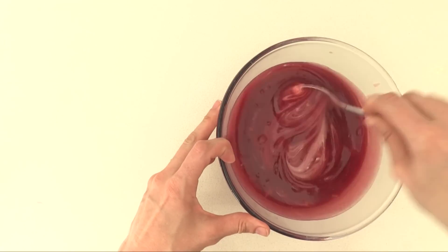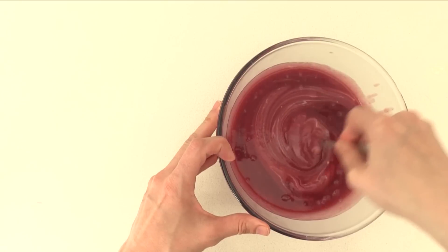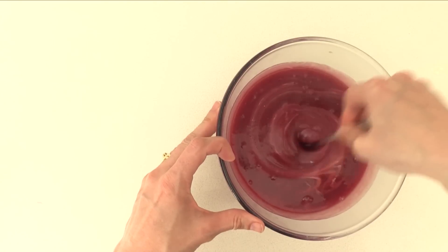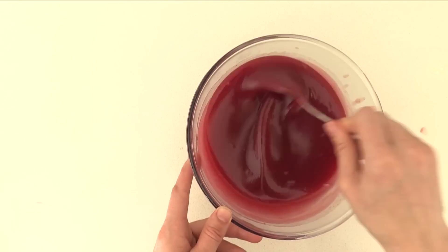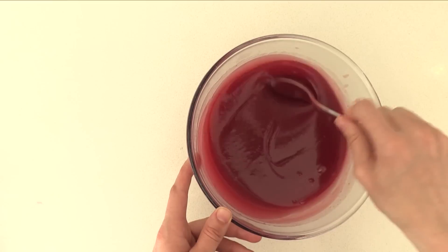If the glaze is quite hot when you pour it over your dessert it will just melt the top layer of the dessert and then slide off. That's not what you want obviously so we want to cool it down to room temperature.